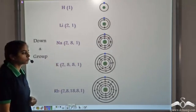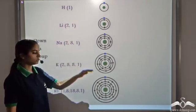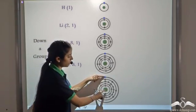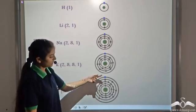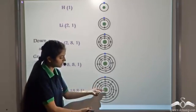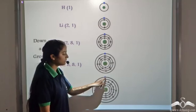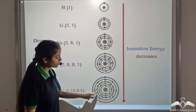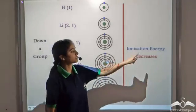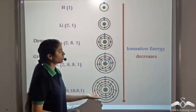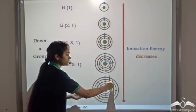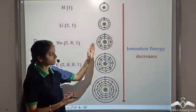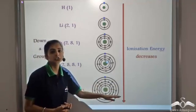What happens when we move from top to bottom in a group? When moving from top to bottom, the atomic size increases. This leads to a greater distance between the outermost shell and the nucleus. Since the distance is increasing, the electron needs lesser energy to be removed. As the outermost shell electrons are away from the nucleus, we need lesser energy to remove them, so the ionization energy decreases on moving from top to bottom in a group.